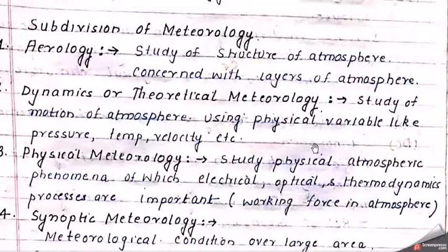Now we come to the subdivisions of meteorology. The first subdivision is aerology — the vertical structure of the atmosphere above the earth's surface, with layers like the troposphere, mesosphere, thermosphere, ionosphere, and exosphere. The second subdivision is dynamics or theoretical meteorology — the study of motion of the atmosphere, how air is moving, and its physical variables like pressure, temperature, and velocity.